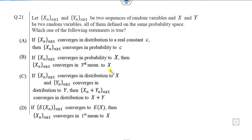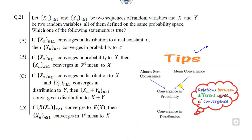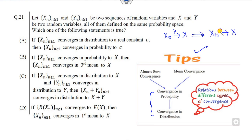We will start with question number 21, which is related to sequences of random variables and whether there is convergence in distribution or convergence in probability. For any question related to convergence, remember this key relation: if X_n converges to X in probability, then this implies X_n converges to X in distribution as well.